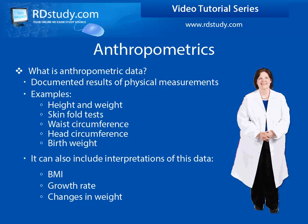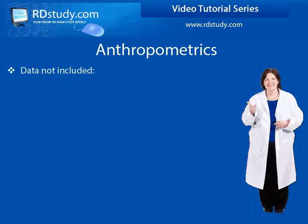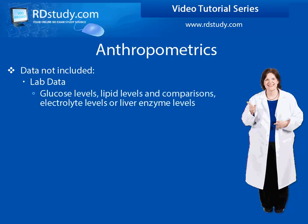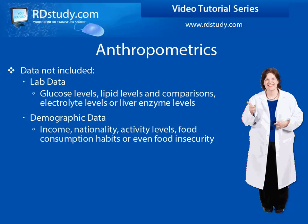Now that we know what is considered anthropometric data, let's show you some examples of things that are not. Things that would not be included would be items such as any biochemical data. This includes anything found on a lab report such as lipid levels, glucose levels, comparisons, A1C levels, electrolyte levels, or even liver enzyme levels. It also does not include demographic data such as income or nationality.